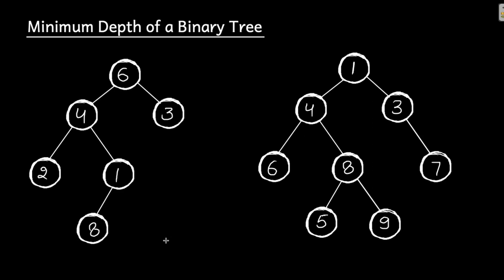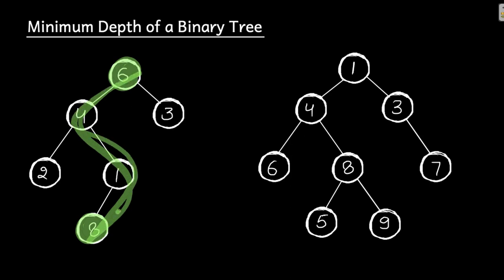For example, if this is the root and this is the leaf, and I calculate the depth along this path, then the depth is defined as the number of nodes along this route. So the depth of this path is one, two, three, four — meaning the number of nodes along the path from root to leaf.